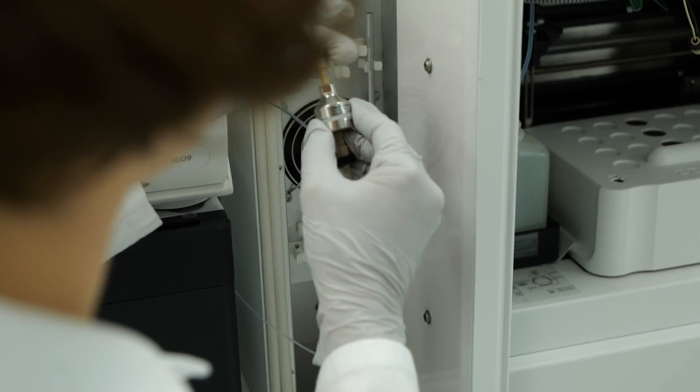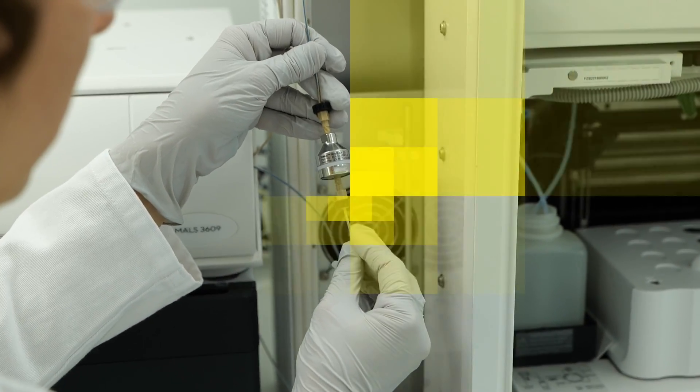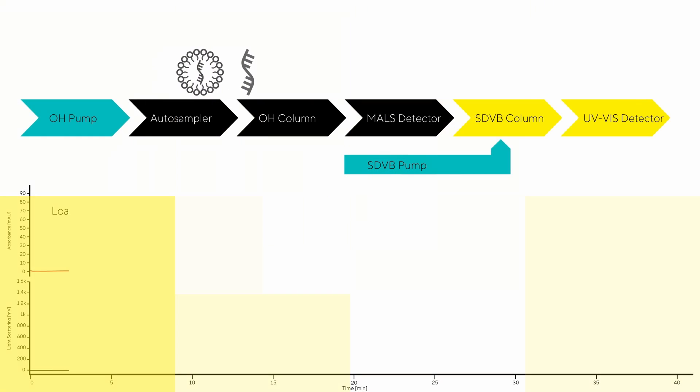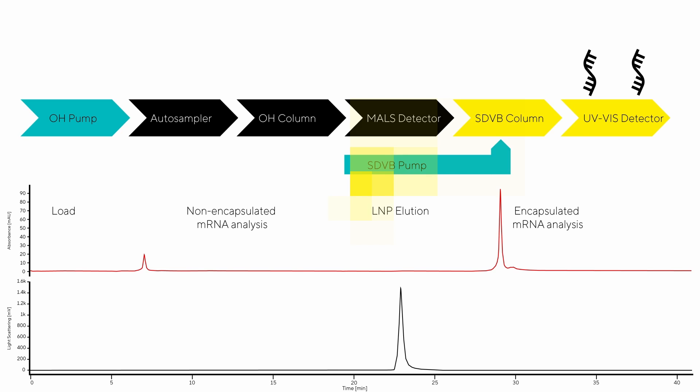During analysis, non-encapsulated nucleic acid passes through the OH column to the SDVB column, where it is bound and eluted based on length, while LMPs remain bound to the OH column. In the next step, LMPs are eluted from the OH column, bound and opened on the SDVB column. The encapsulated nucleic acid is released for analysis in the same way as the non-encapsulated nucleic acid in the previous step.